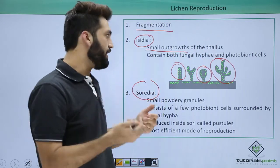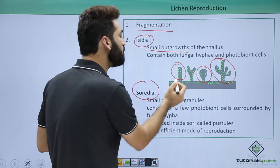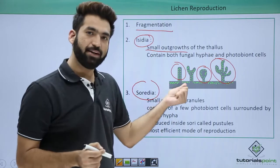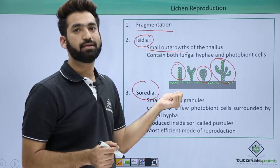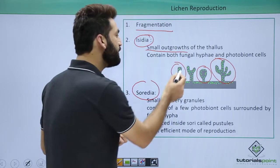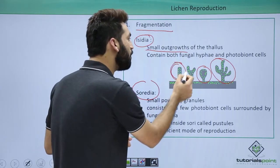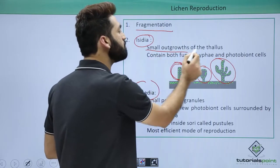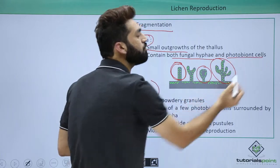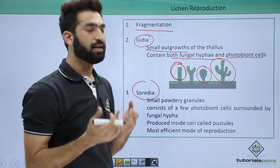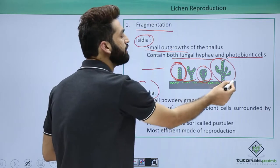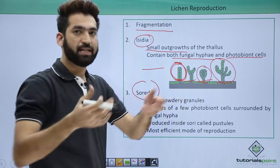You can see these small green dots — those are actually the algae partner sitting inside, and the covering is because of the fungus. Isidia are small outgrowths of the thallus in which you have the fungal hyphae and the phycobiont, meaning algae cells. When these isidia separate and fall, wherever they land they give rise to a new lichen.